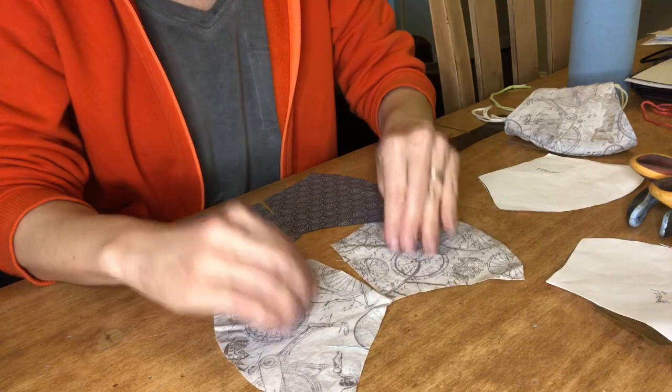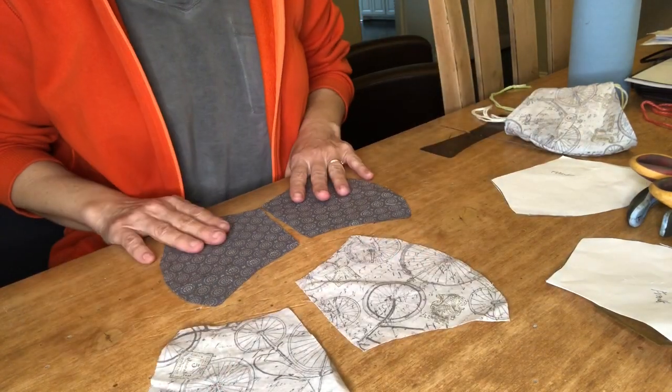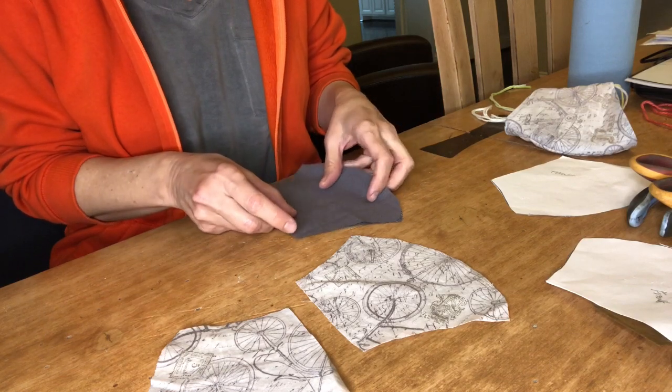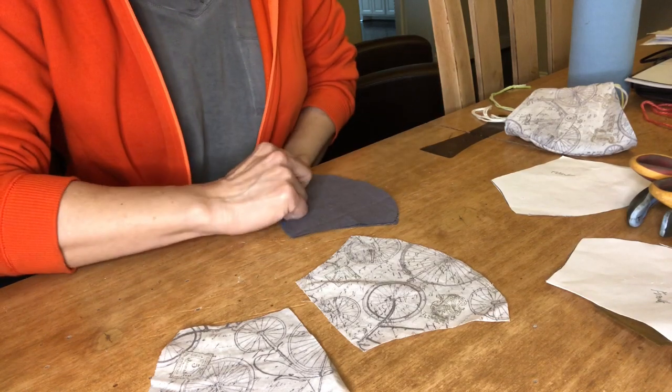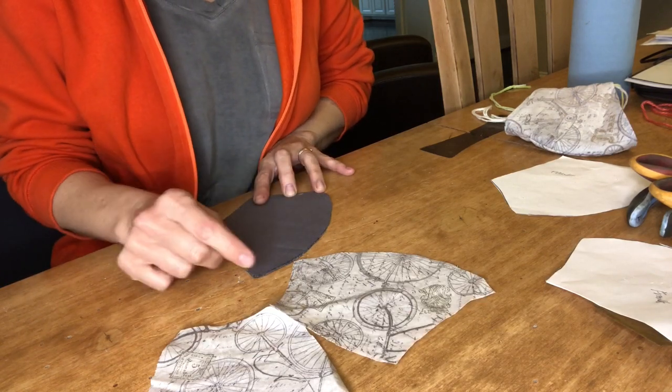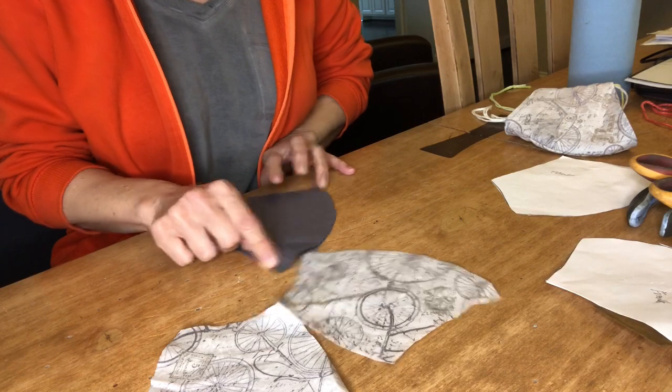What I do is after I have my patterns cut out, I'll put them right sides together and sew right along here, leaving about a quarter of an inch for hem.